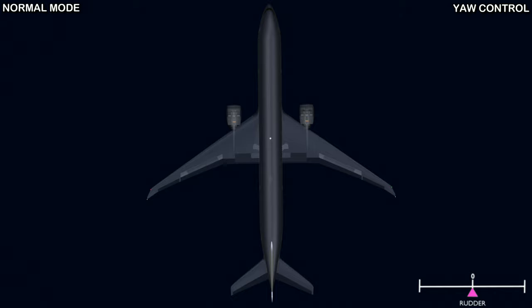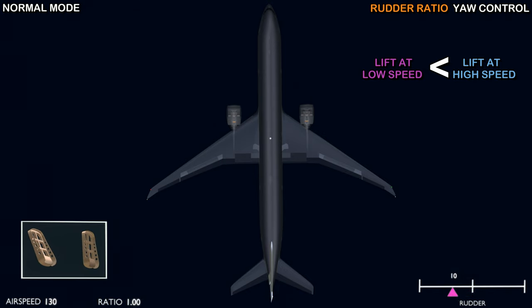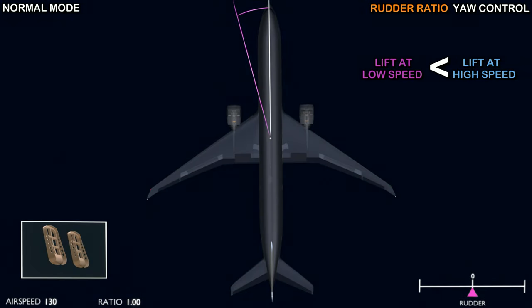The flight computer calculates the rudder deflection using the rudder ratio software function. How much the rudder deflects affects the lift on the stabilizer. Another factor that affects the lift is airspeed. For a given rudder deflection, as airspeed increases, the lift will increase. Therefore, the flight computer will control the rudder based on airspeed using a ratio system. At an airspeed of around 130 knots, the rudder ratio is one. The full travel of the pedal will deflect the rudder to its maximum of 27 degrees, and the aircraft yaws at a particular rate. Now as the airspeed increases, the rudder ratio decreases, which means the flight computer reduces the rudder deflection with increasing airspeed.